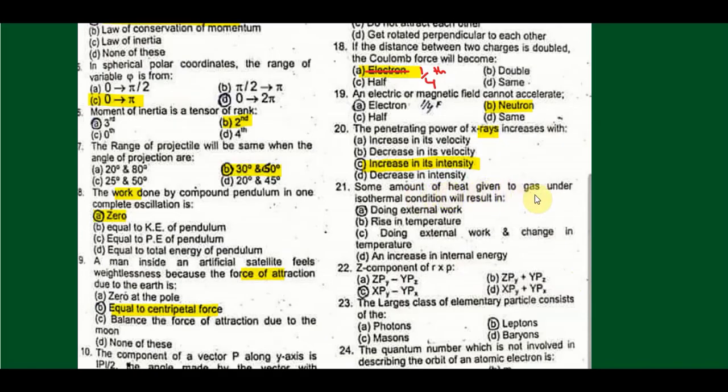Amount of heat given to a gas under isothermal condition will result in doing external work. Because according to the isothermal condition, temperature should remain constant. So you are also providing heat, so to keep the temperature constant, you will have to do some external work.